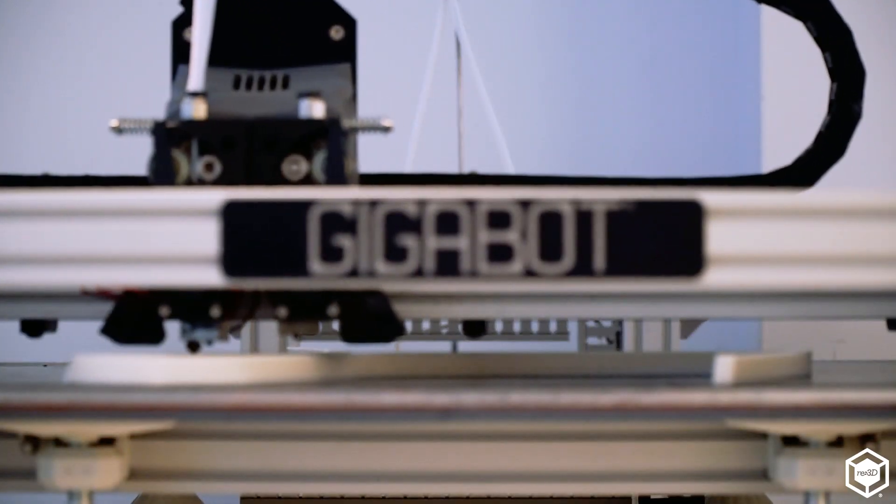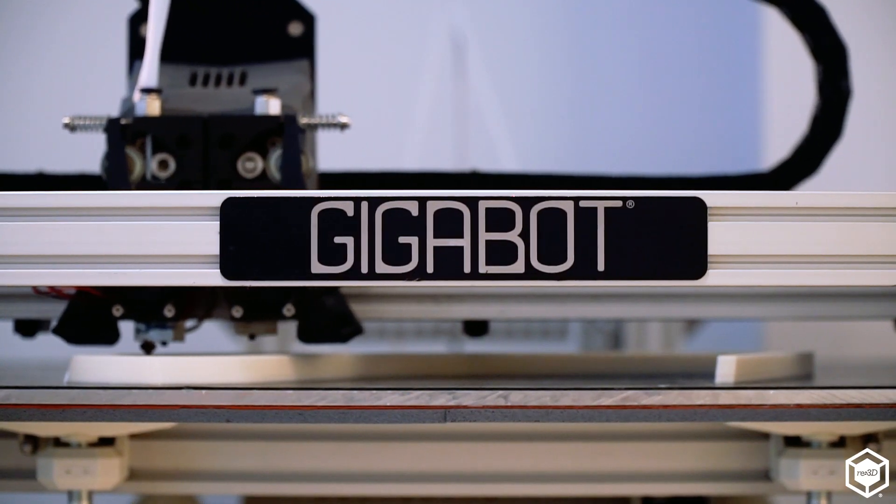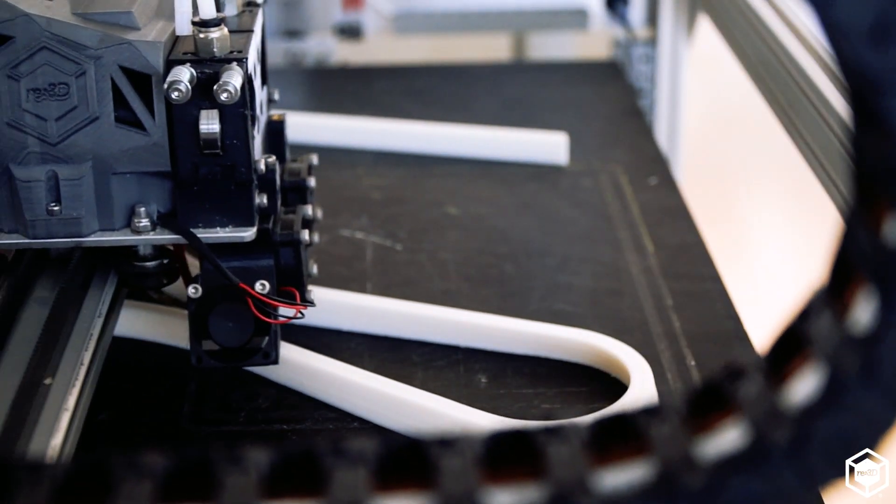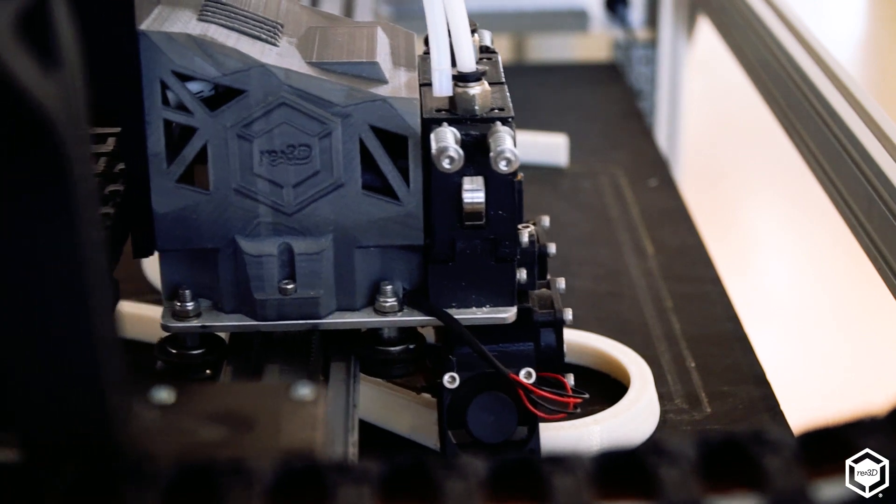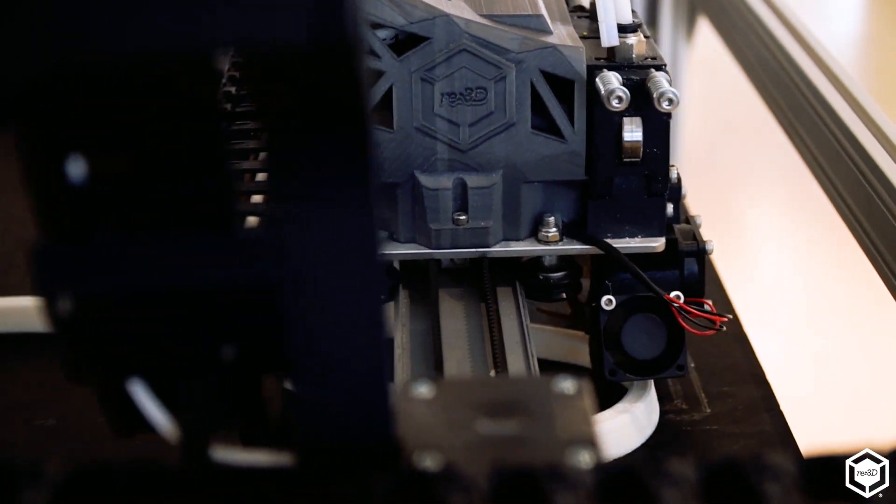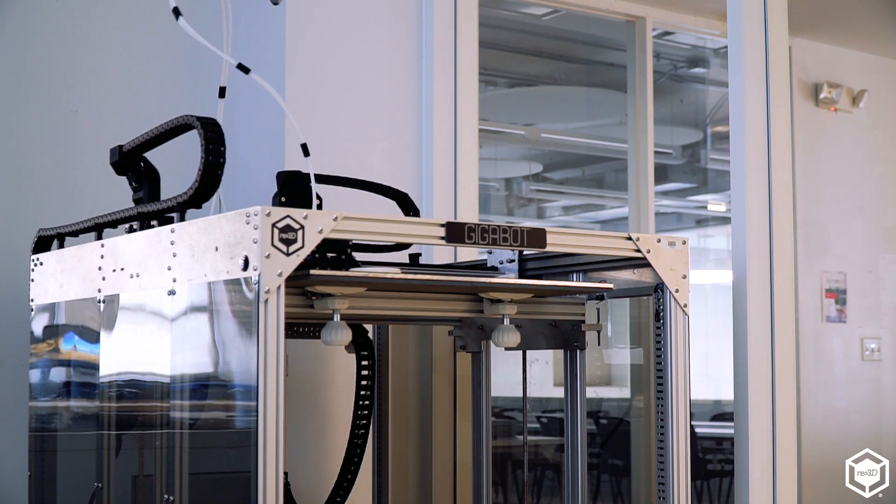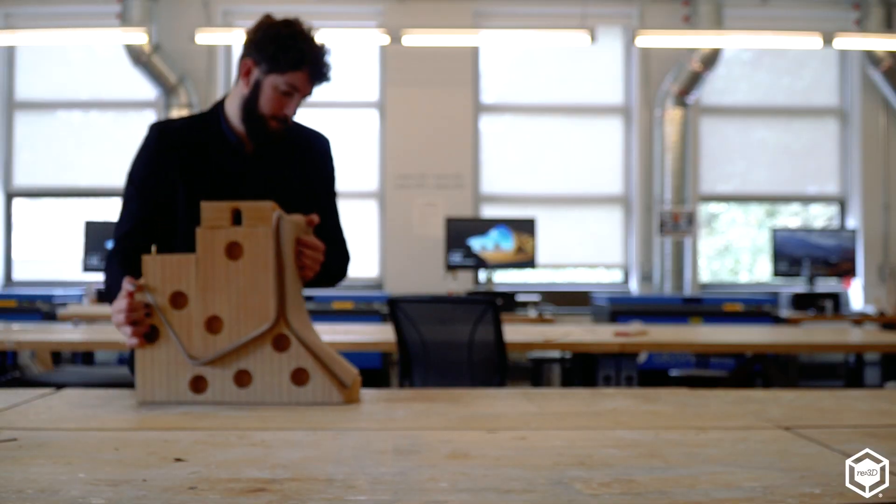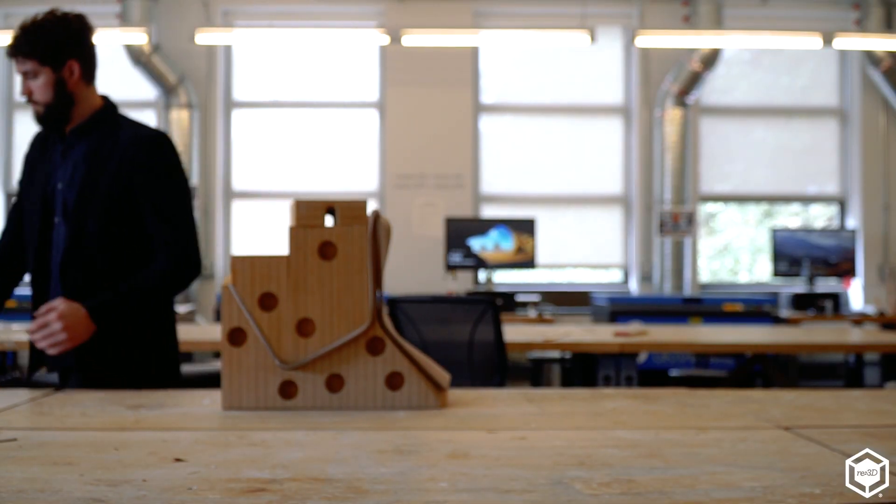When the Gigabot is used to produce architectural representational scale models, it's typically to produce geometry that would be otherwise quite difficult to replicate physically, that is quite simple to produce digitally. The Gigabot allows us to produce fairly large-scale representational models. I've used it in the same way for a number of my own research projects.